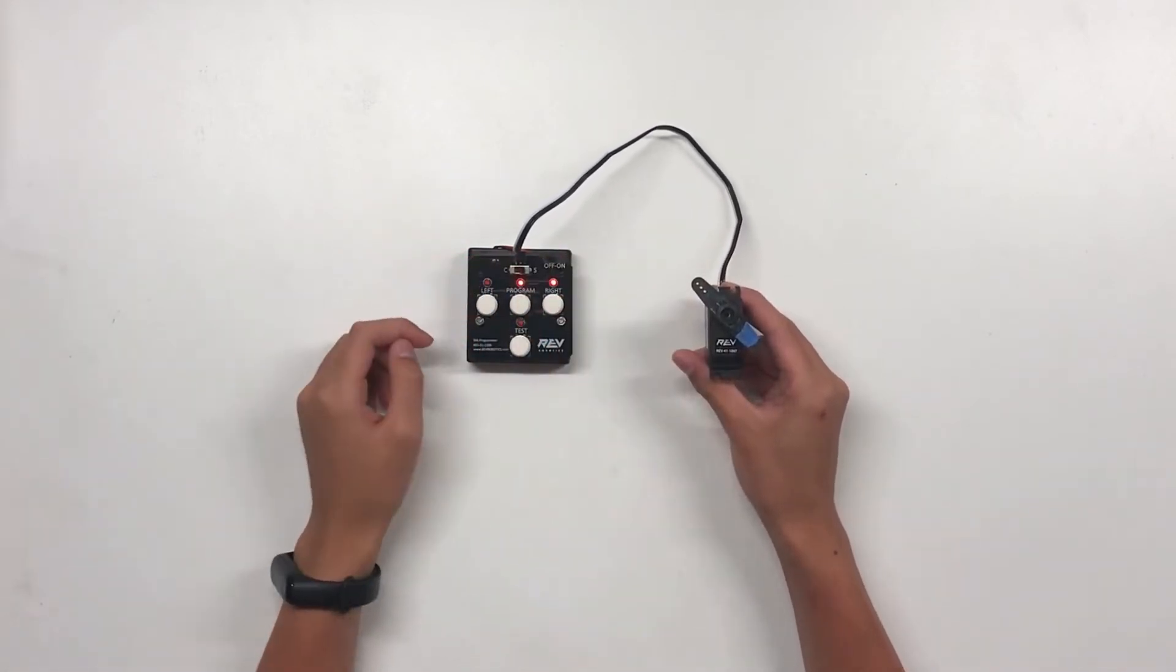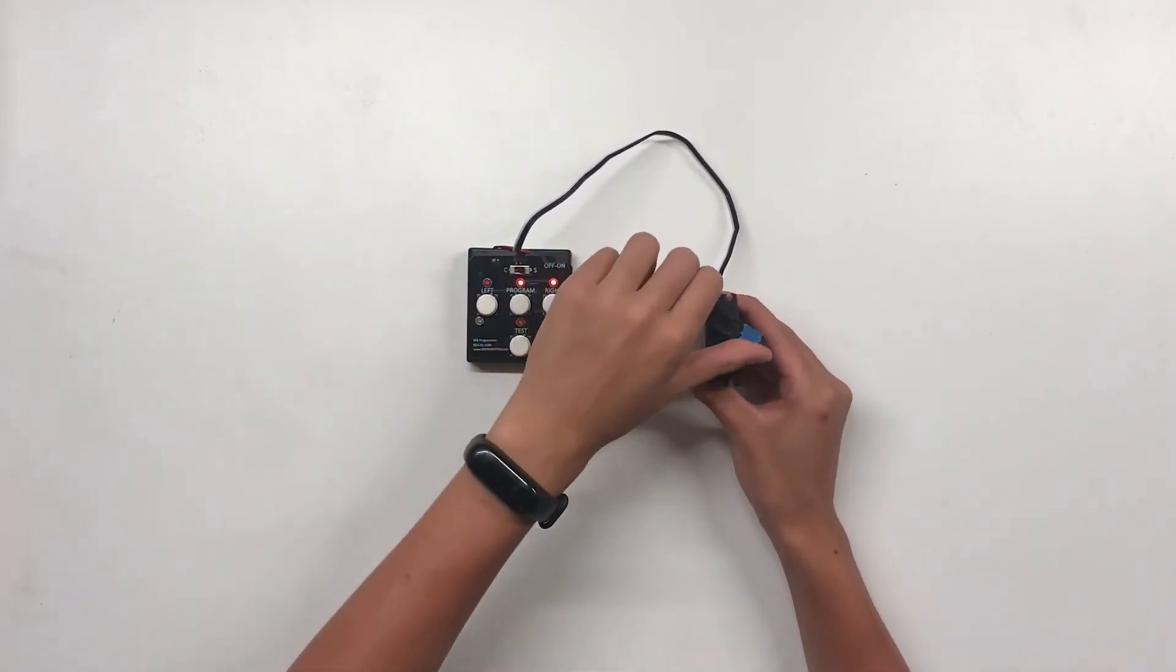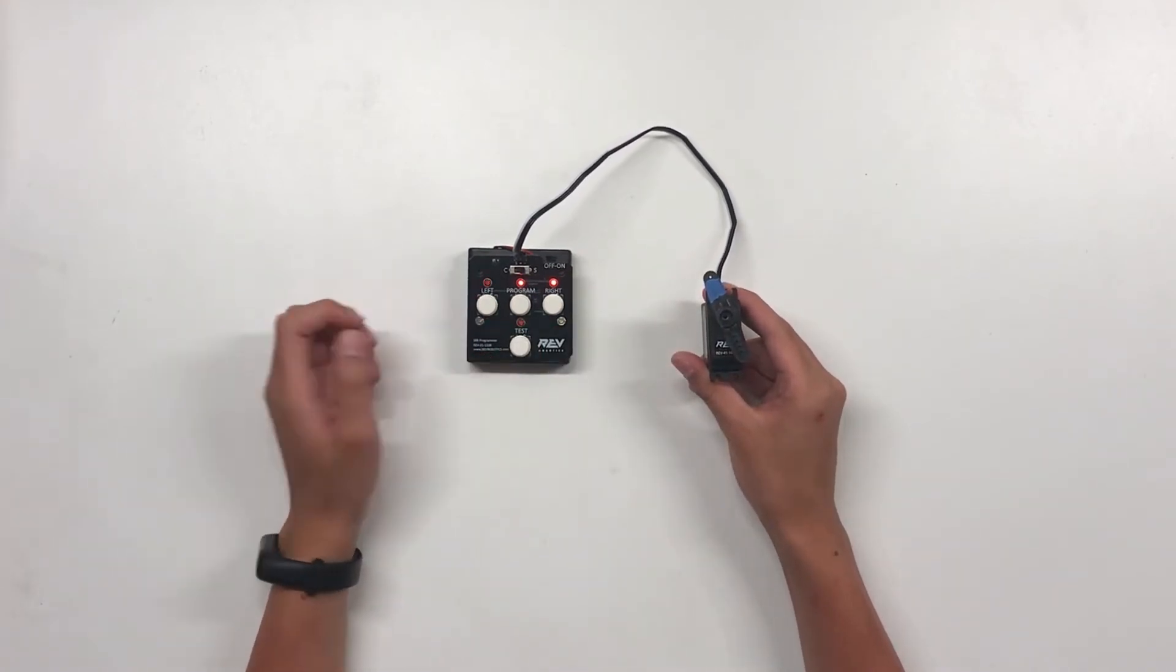If it doesn't, adjust the position and hit the button until it does light up. Then, you want to do the exact same thing on the other side to set the other limit.